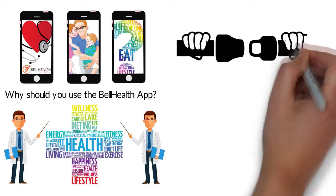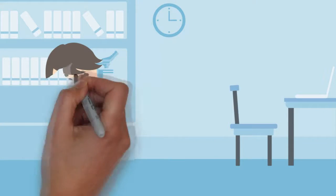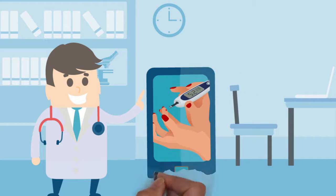Seatbelts save your life in an accident, but isn't it better to not have an accident at all? Well, with the Bell Health app, you can make sure you never get diabetes or manage your sugar levels well if you are diabetic.